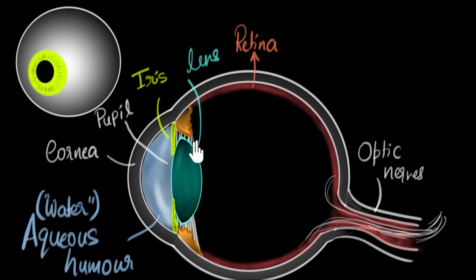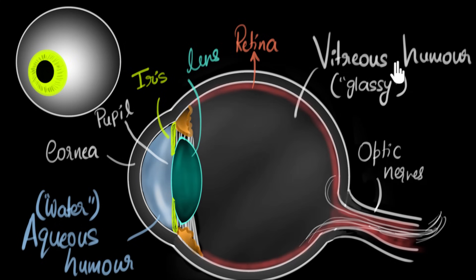And by the way, the space between the lens and the retina is filled with a jelly kind of transparent substance called the vitreous humor. The word vitreous means looks like glass or kind of like glass. Of course it's not made of glass, it's made of organic substance, but just like glass, it is pretty transparent.